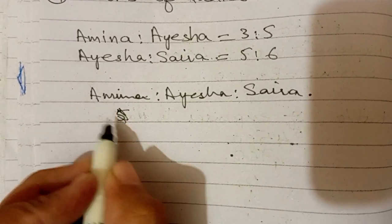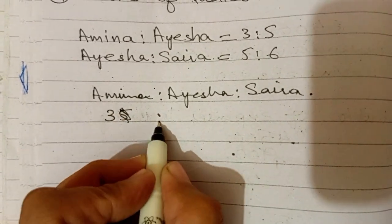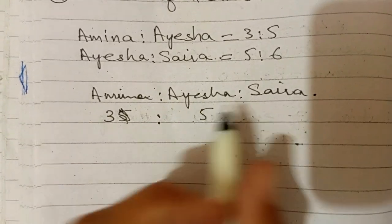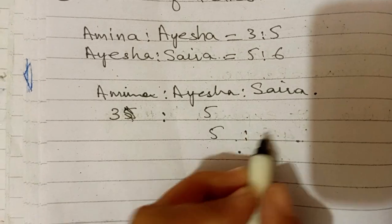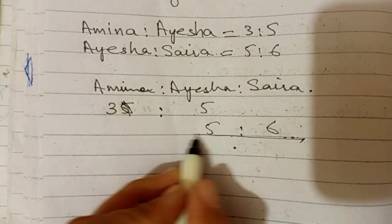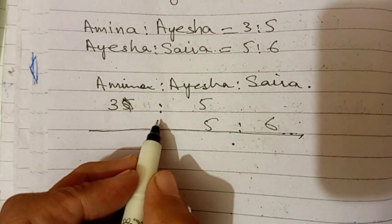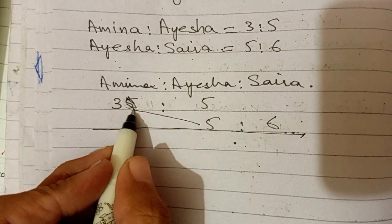Amina sorry 3. Amina 3 ratio Aisha کا 5 یہ دونوں آگئے اب Aisha اور Saira یہاں Aisha اور یہ ہے Saira یہاں line draw کریں گے mention کریں گے سب سے پہلے اس number کو یوں.